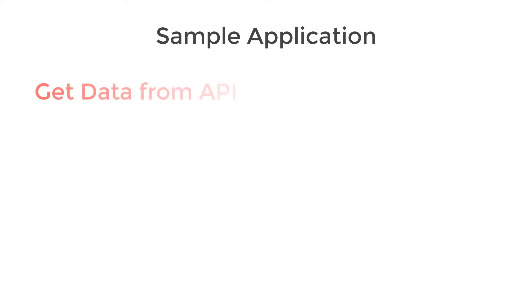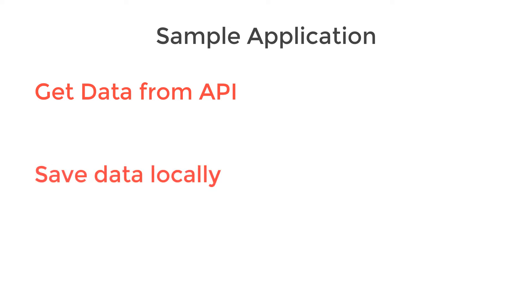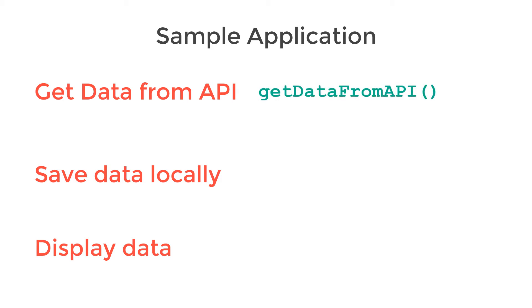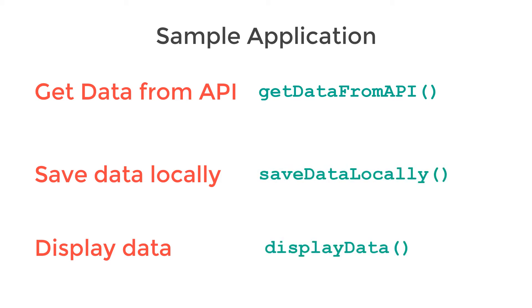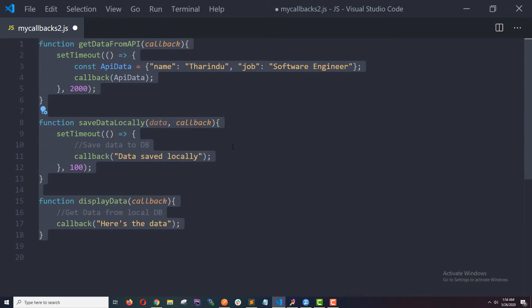Let's take another example. Say I have a simple application that works like this: first it pulls some data from an API, then when the data is ready it saves the data in a local database, and finally it displays the data to the user. To achieve this functionality we need three functions: one for getting data from the API, one for saving data locally, and one for displaying data. I've already written these three functions using callbacks so that I can run them asynchronously.